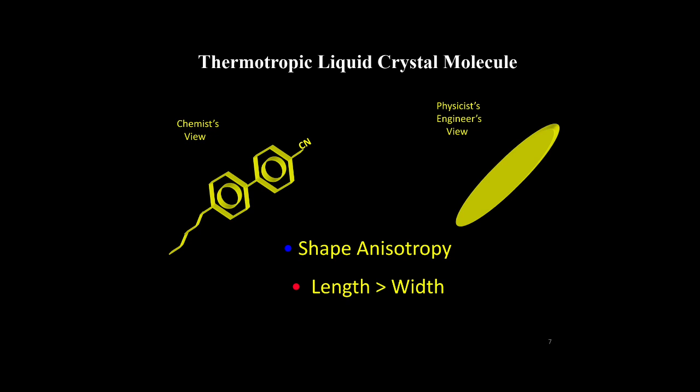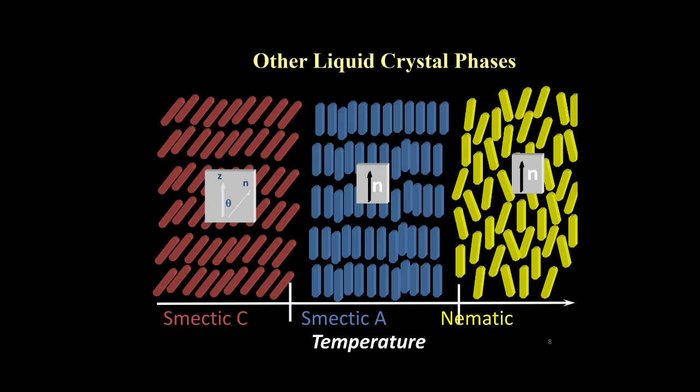Thermotropic liquid crystals are a biphenyl with a long hydrocarbon tail. They have shape anisotropy - the length is greater than width. Thermotropic liquid crystals are of different types including smectic A, smectic C, and nematic liquid crystal. We can see in all three types, the rod-shaped molecules are arranged in the same direction.